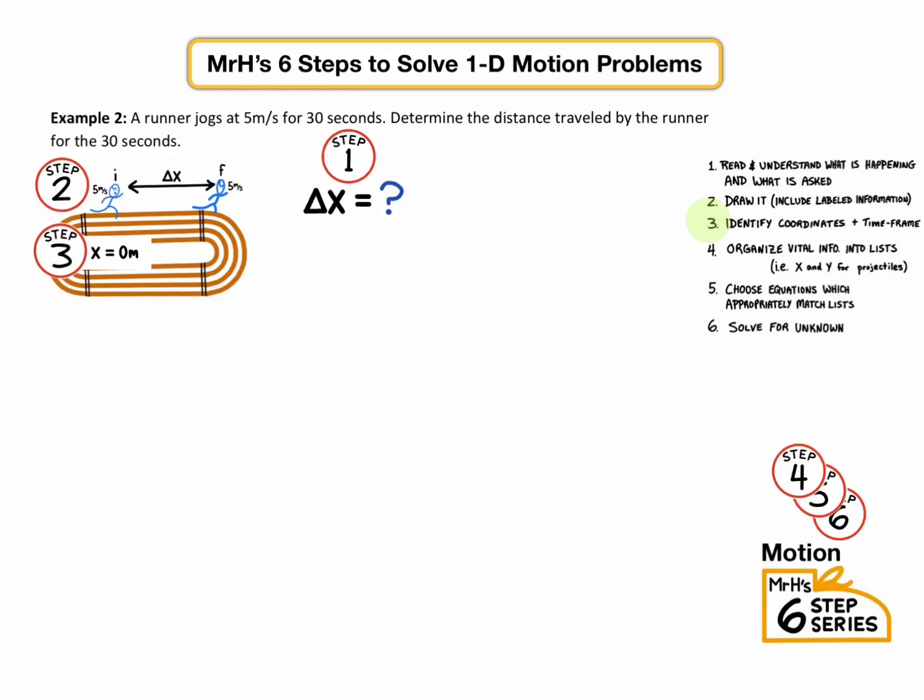Step four, organized information into lists. So we've already got the question, x equals question mark. Then we're going to put the other information. They said the runner jogs at five meters per second, and this is going to be different from last time where we had v initial and v final. They're jogging at five meters per second the whole entire time. So you could write vi and vf, but they would both equal five. So I'm just going to write v average equals five, and we'll look at the other option later. And time was 30 seconds.